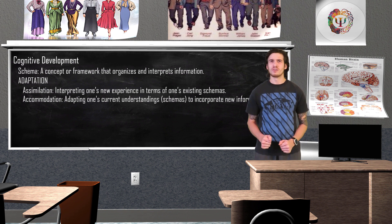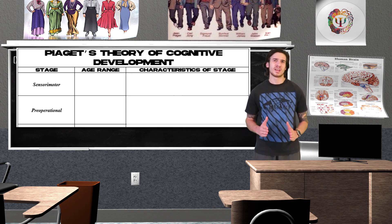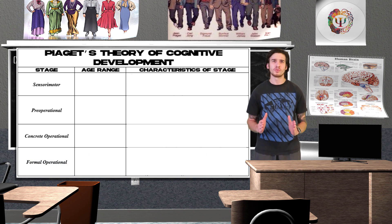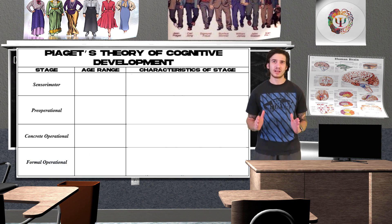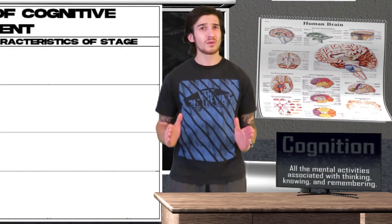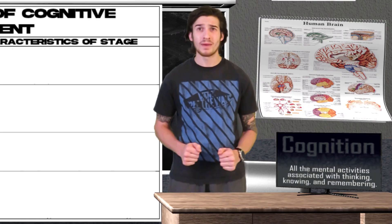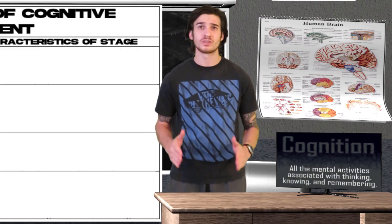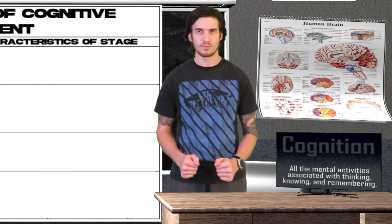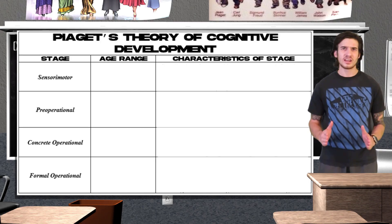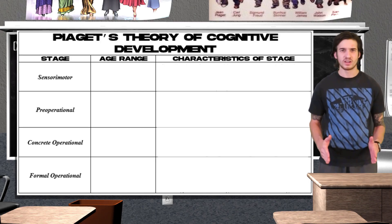Now onto Piaget's theory of cognitive development. His theory suggests that children move through four separate stages of cognitive development which reflect a higher level of thinking. Cognition includes all mental activities associated with thinking, knowing, and remembering. Each stage will reflect a change in some aspect of cognition.